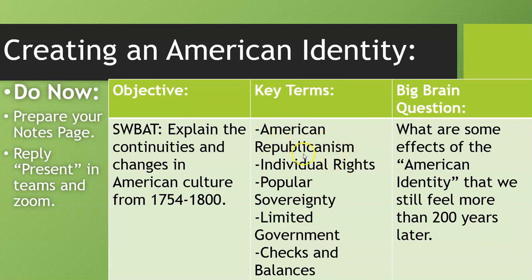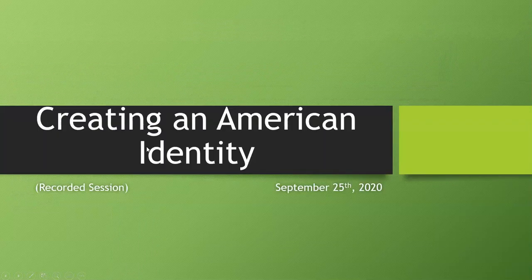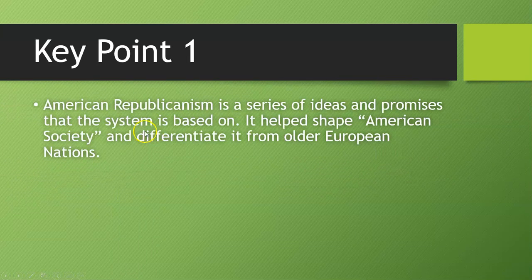A couple of terms: American republicanism — this one is probably one you have not seen before; the rest you might have. So if you know these already or if you've already written them somewhere else, just keep them in mind as we move forward. We're going to skip the big brain question and get right into it. American republicanism is a series of ideas and promises that the system is based on.